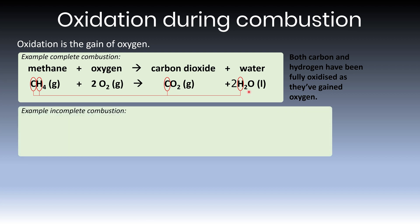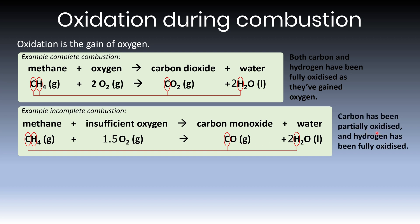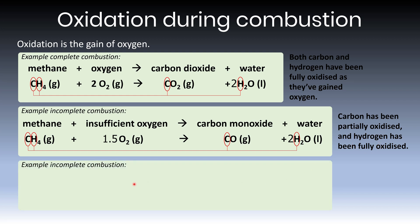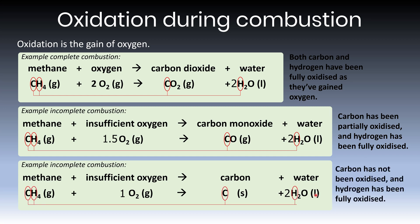In incomplete combustion forming carbon monoxide and water, carbon has gained oxygen but hasn't gained the full amount it could — it could gain two to form CO₂ but hasn't — so carbon has only been partially oxidised, while hydrogen has been fully oxidised. In the version forming carbon and water, the carbon has not gained any oxygen at all, so carbon has not been oxidised, but hydrogen has still been fully oxidised to form water.